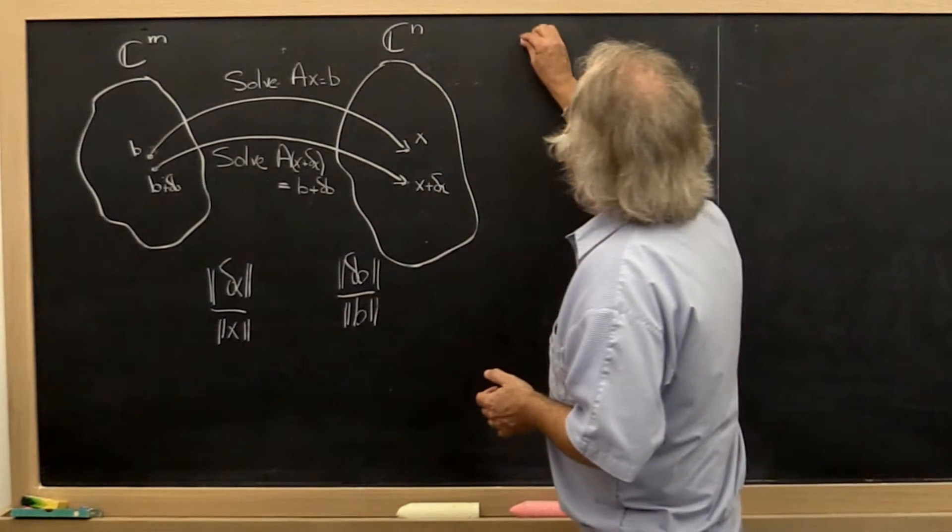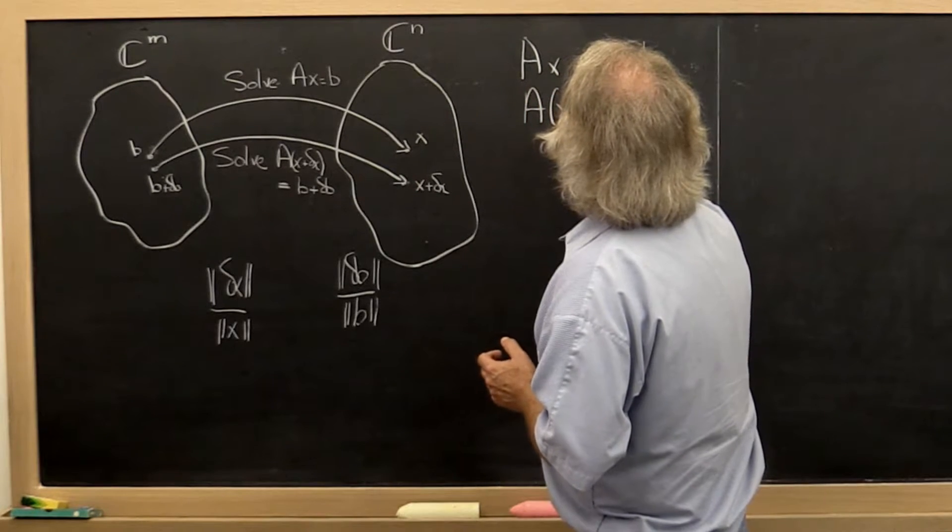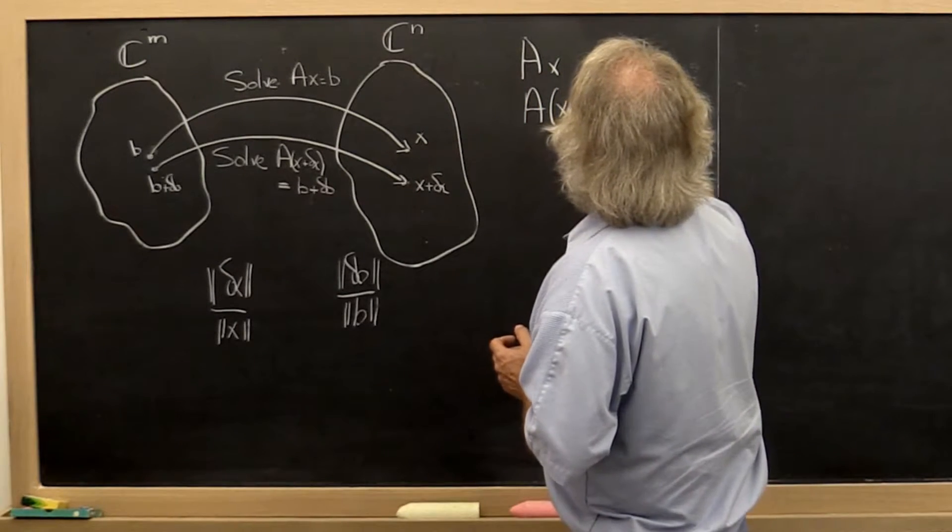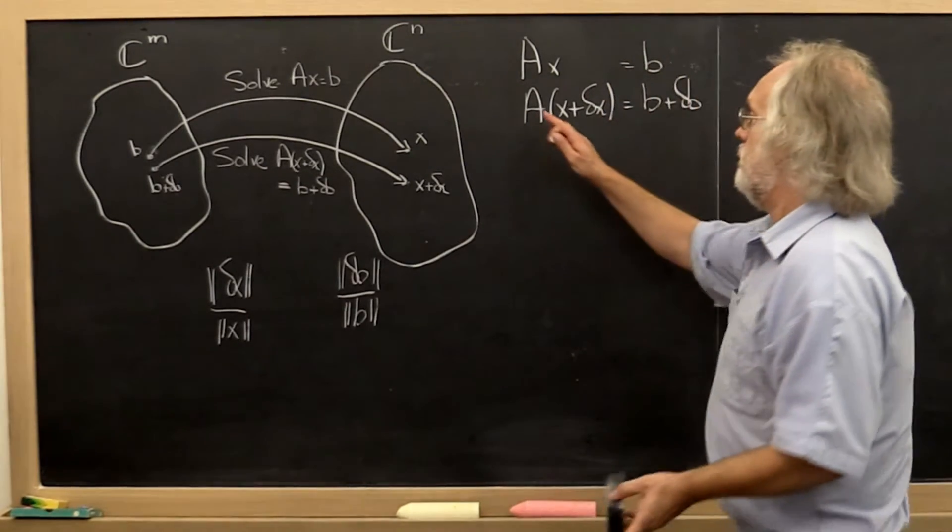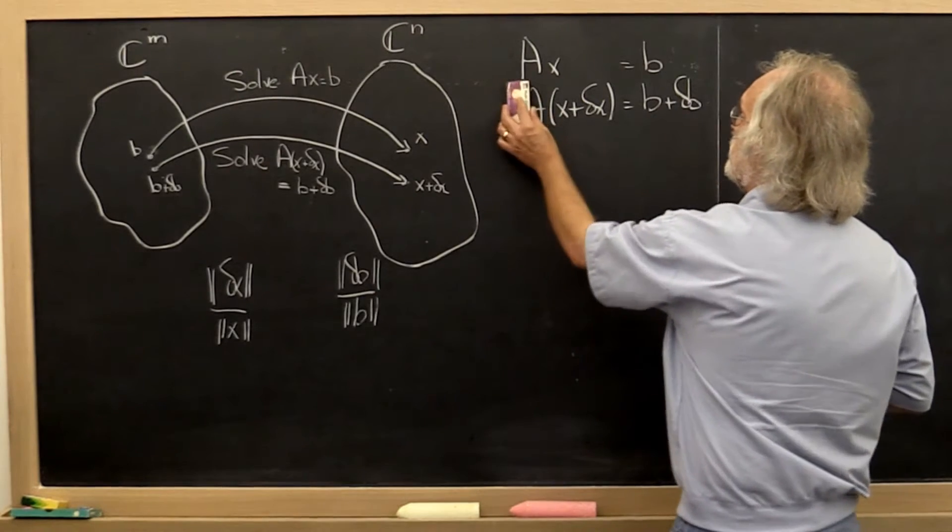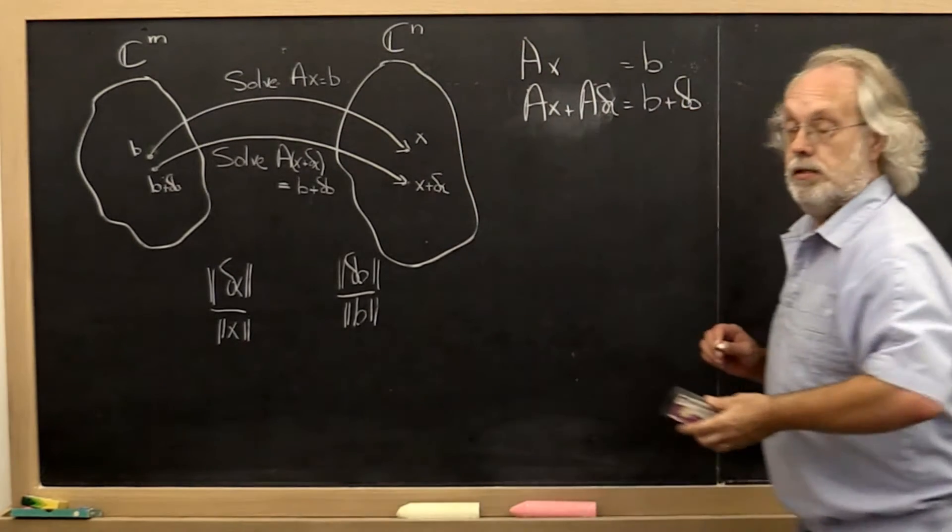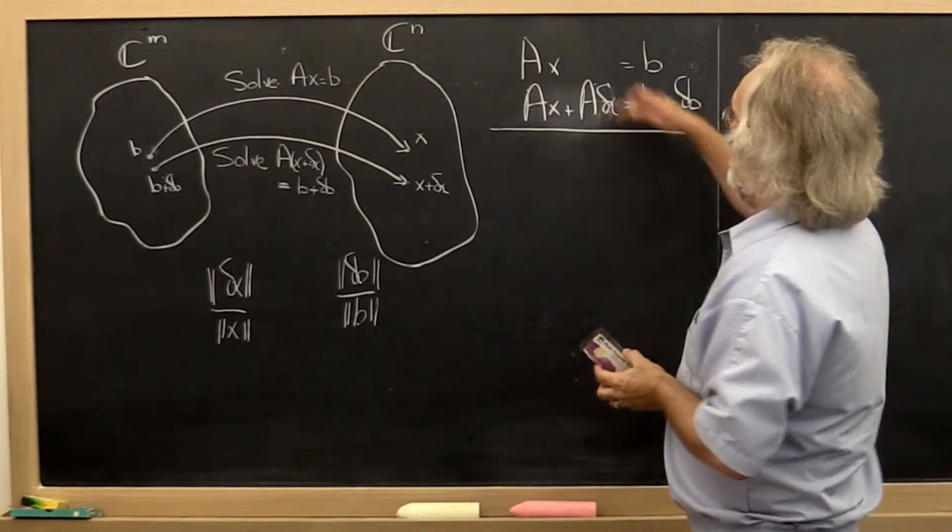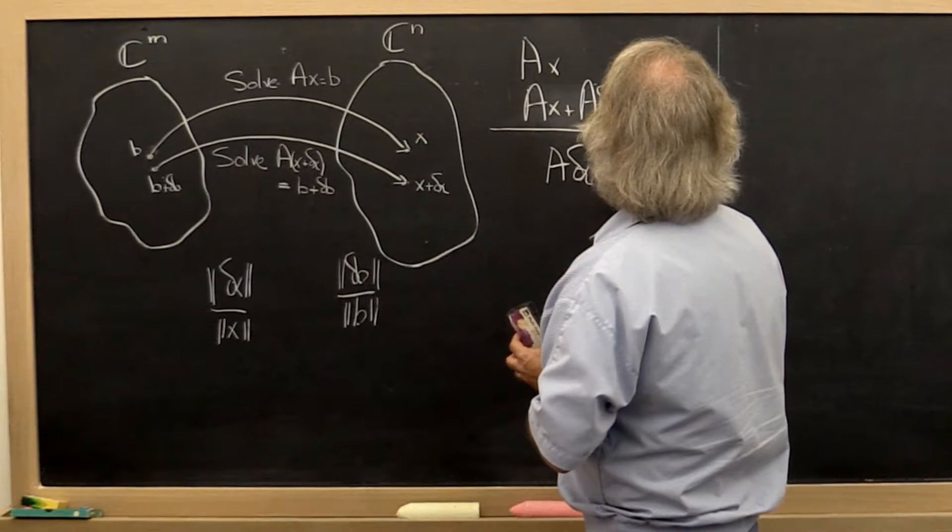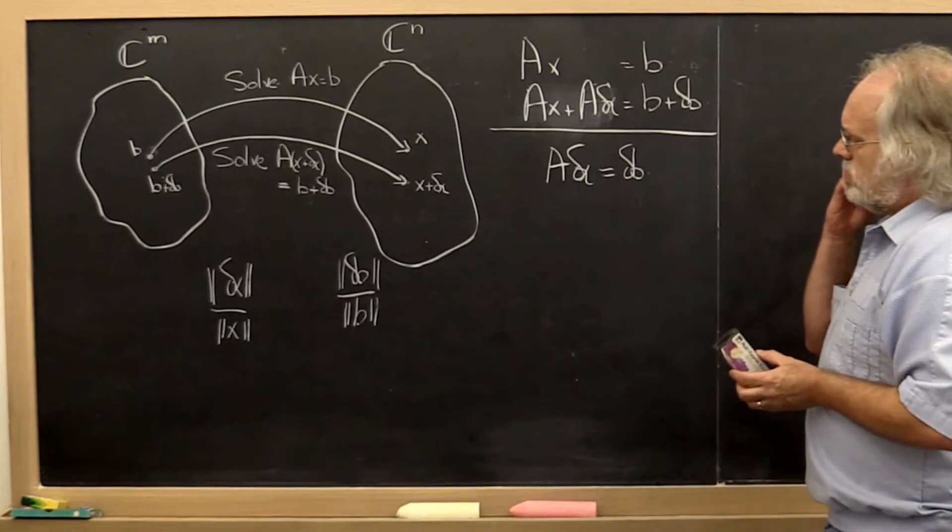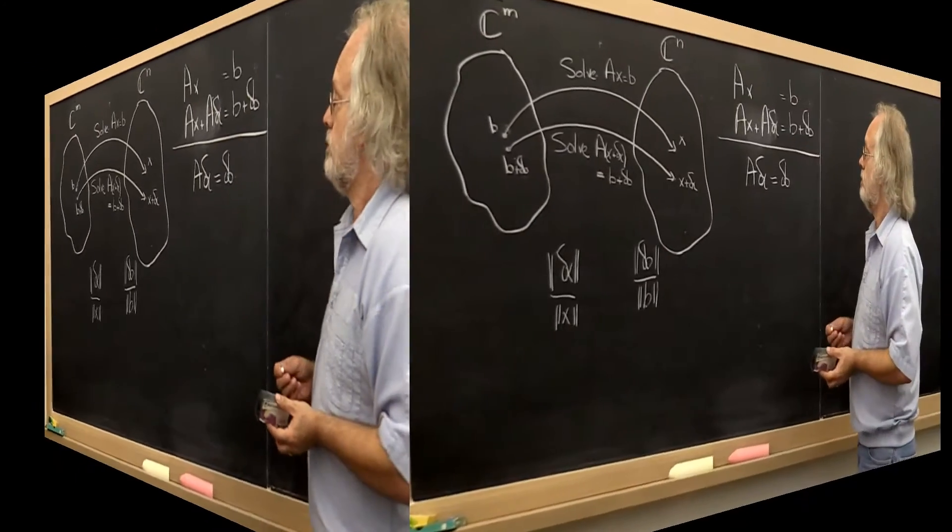Now what do we know? We know that A times x plus delta x is equal to B plus delta B. We know that matrix vector multiplication distributes, so we can replace this by Ax plus A times delta x. Then we can take the first equation, subtract it from the second equation and say that leaves us with A times delta x equals delta B. So there's this nice relationship between the error that was introduced and the error in the solution.